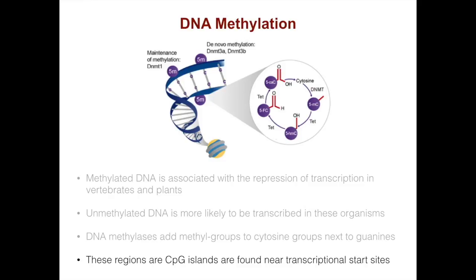Eukaryotic promoters are more complex than their prokaryotic cousins. These promoters have binding sites for multiple DNA binding proteins. Here I'm showing different consensus sequences that are associated with promoters, and these sequences and regions can be mixed and matched. Each of these promoter sequences, such as GC boxes, are associated with the binding of certain activator proteins that lead to transcription.